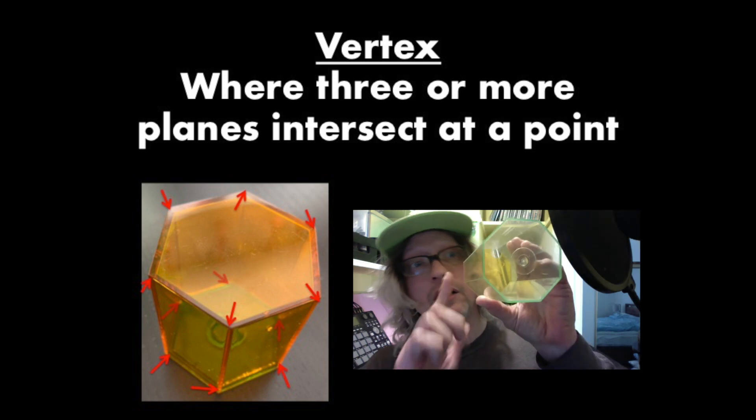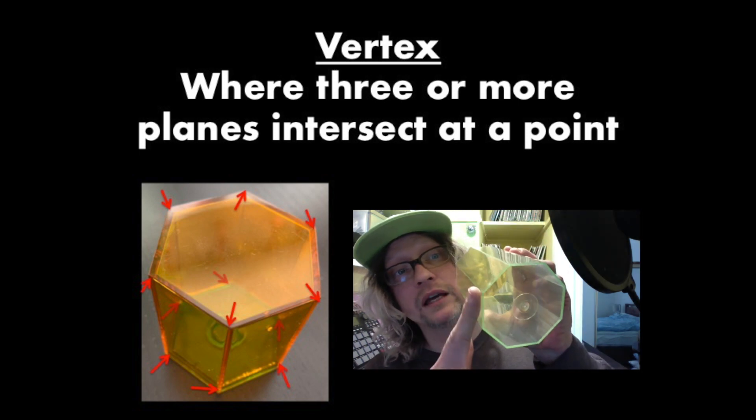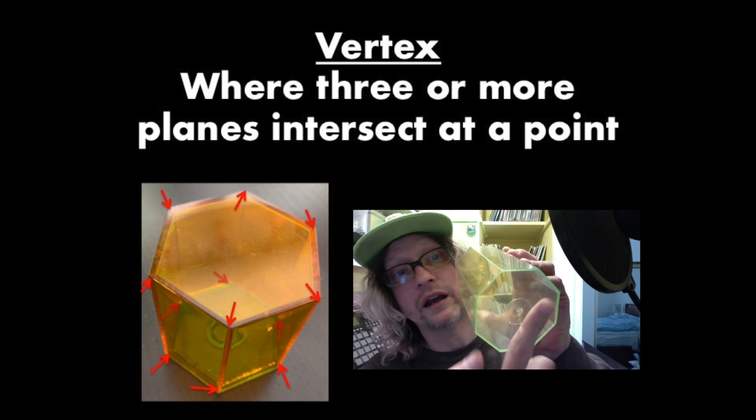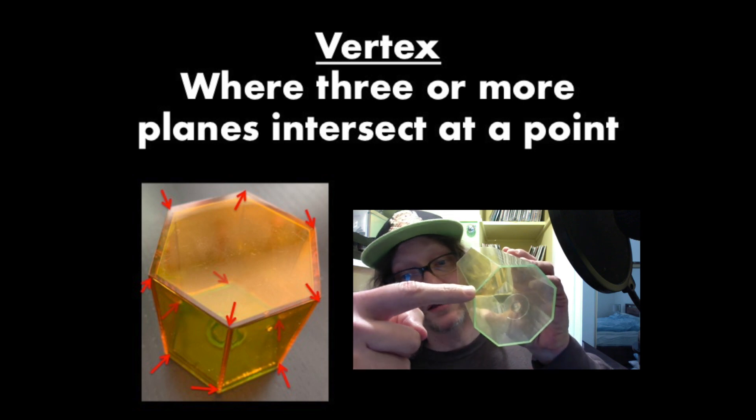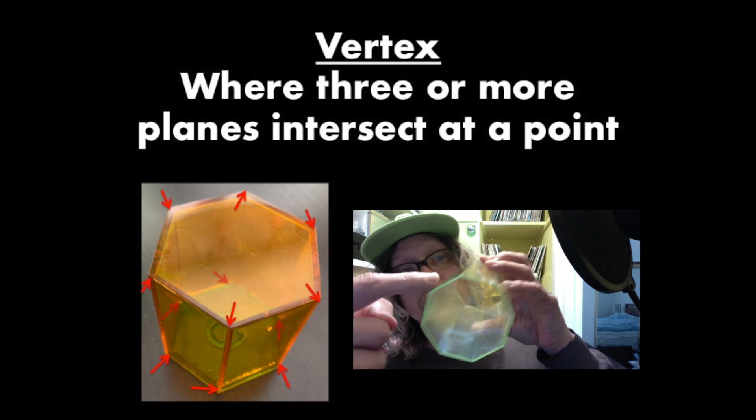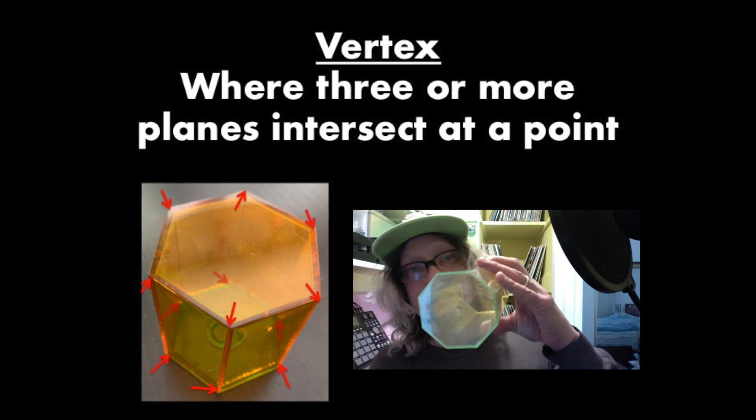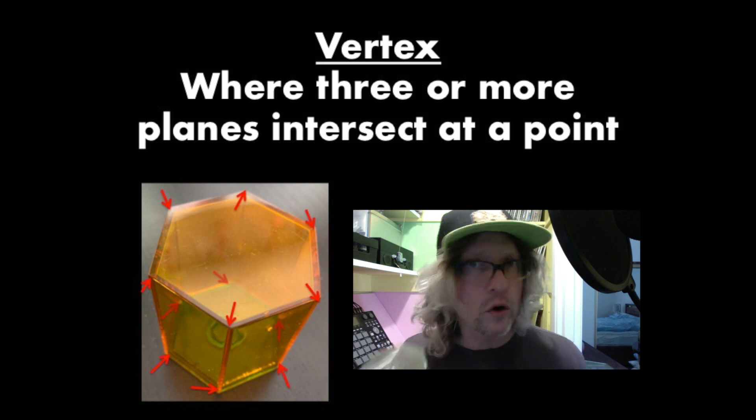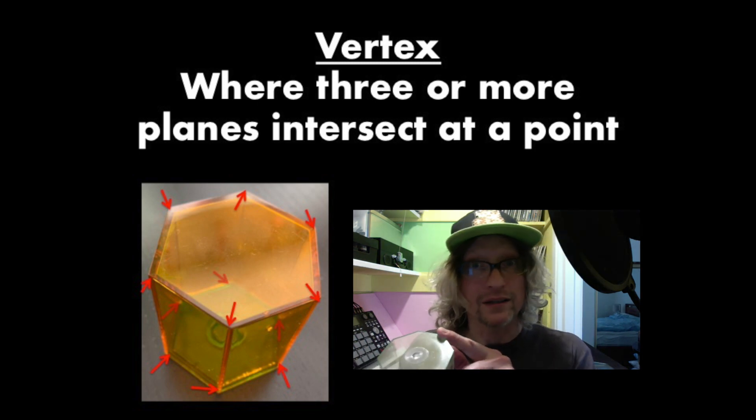Here's another example. If we look right here, we have this plane, this plane, and this front plane, all meeting at this point right here. This point is a vertex. A lot of people just call them corners, but the math word for the corner is a vertex.